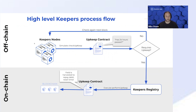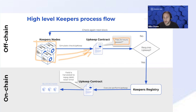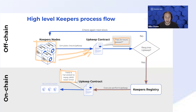In the context of Alchemix's process flow: the Keepers nodes are constantly running the checkUpkeep function in their contract, which checks to see if 24 hours has passed. As soon as that's the case, they send a message to the Keepers Registry on-chain. The registry relays the message to the contract on-chain, triggering the performUpkeep function, which is responsible for harvesting yield, repaying debt, and then resetting the timer so Keepers wait another 24 hours to trigger the process again.